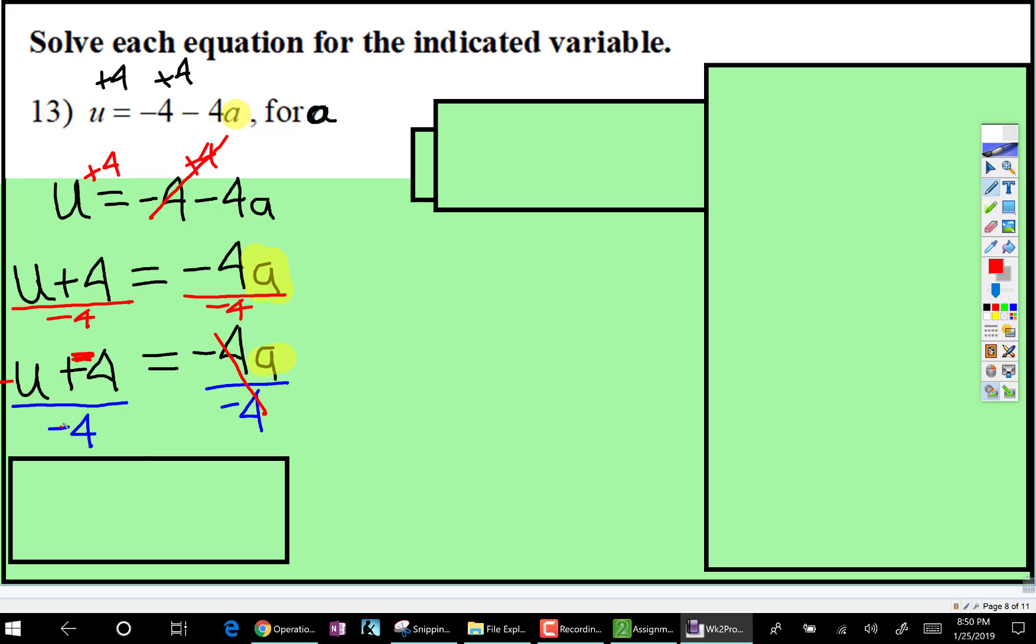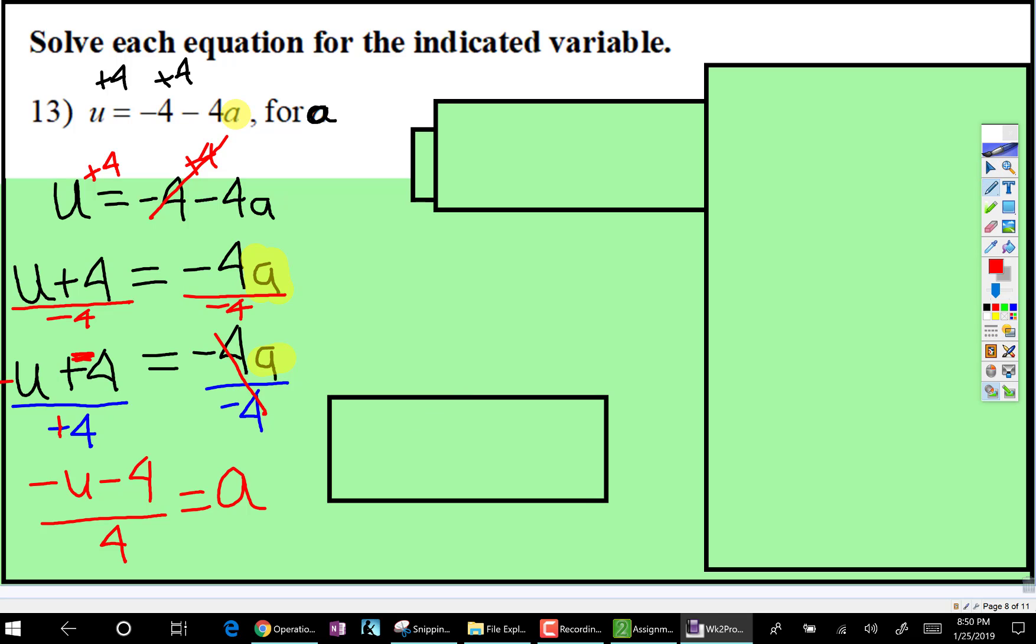And when you have all those signs changed, this sign changes. So the simplification would be negative u subtract 4, all divided by 4.